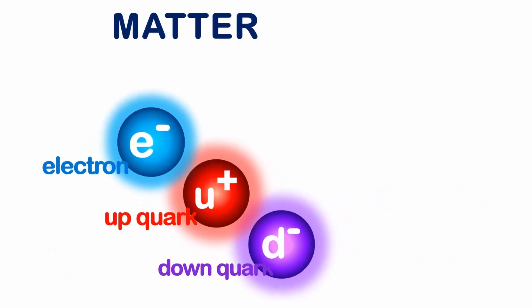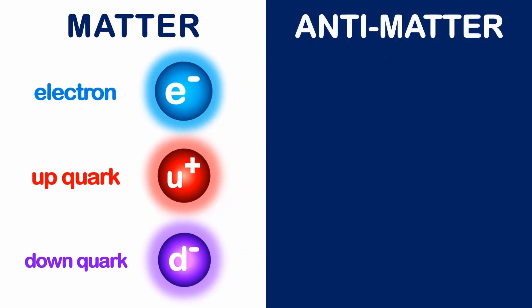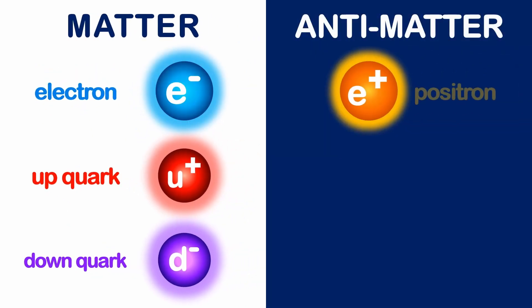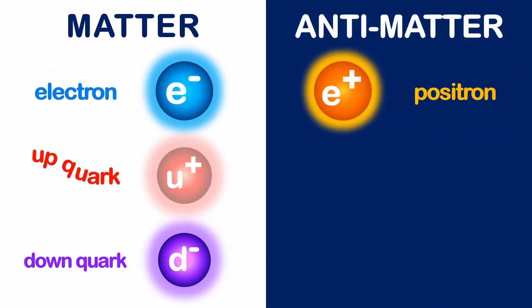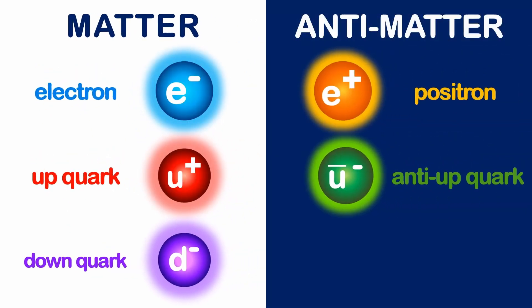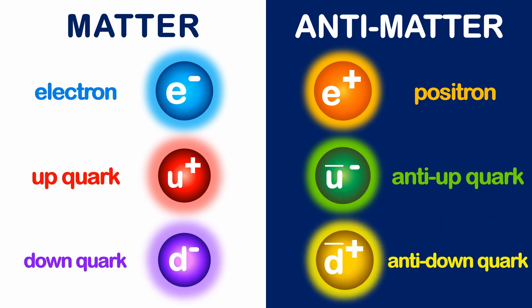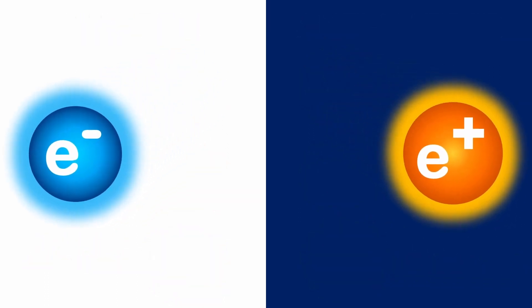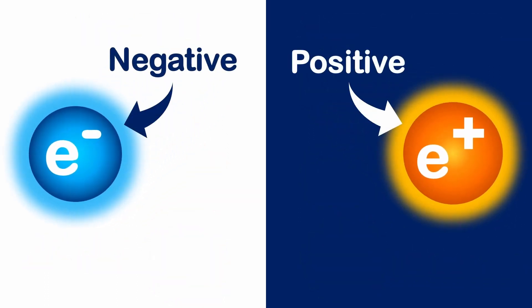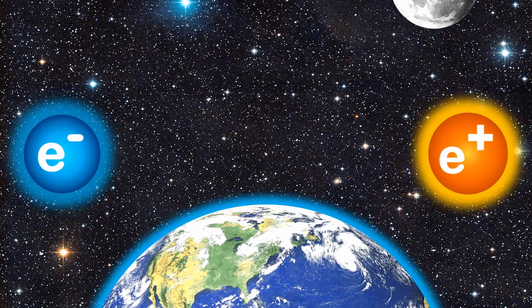Well, antimatter is like matter's evil twin. An electron has a positron, an up quark has an anti-up, and a down has an anti-down. Antimatter is exactly the same but with the opposite charge.